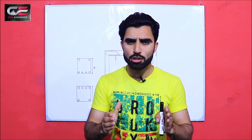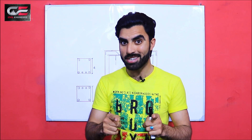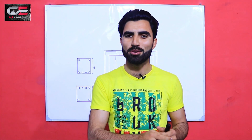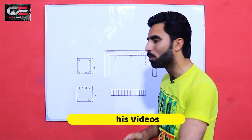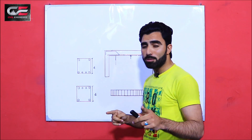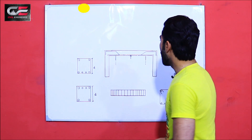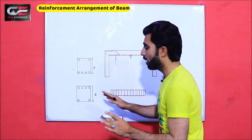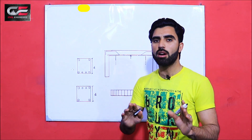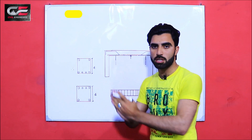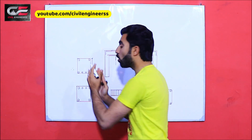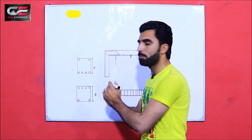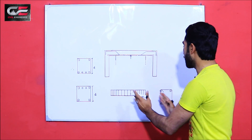The topic — reinforcement arrangement of beam — is related with steel structure. If this video is simple for you, for motivation please like this video and subscribe the channel and press the bell icon if you are new. The topic is reinforcement arrangement of beam. As you can see, this is a beam cross section, and in this video I will show you the cross section of the beam at different points — at mid and also at the end of the support — because we have two cross sections for top beam. I will also show you diameter of steel bars, numbers of steel bars, stirrup spacing, and reinforcement details.